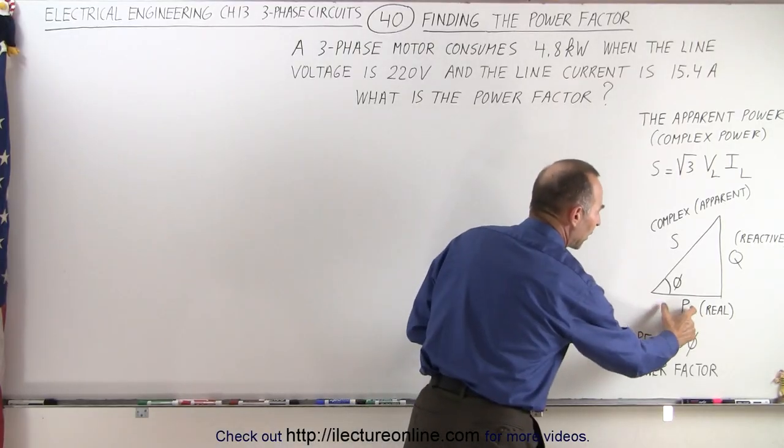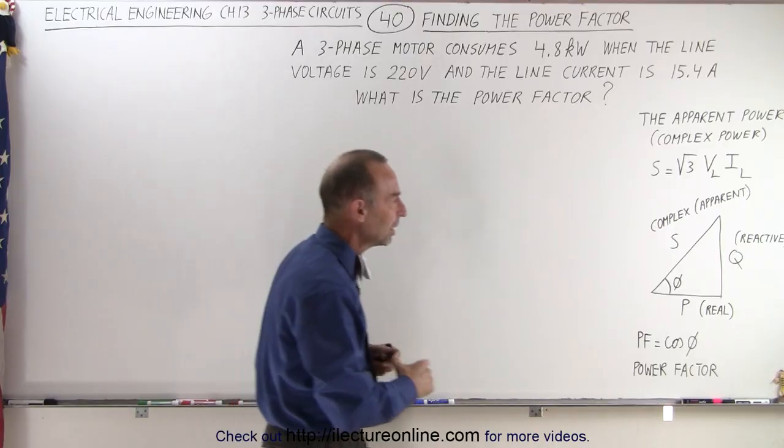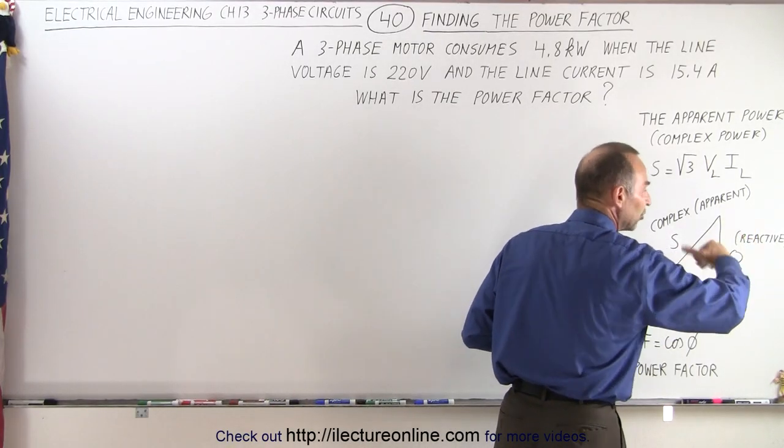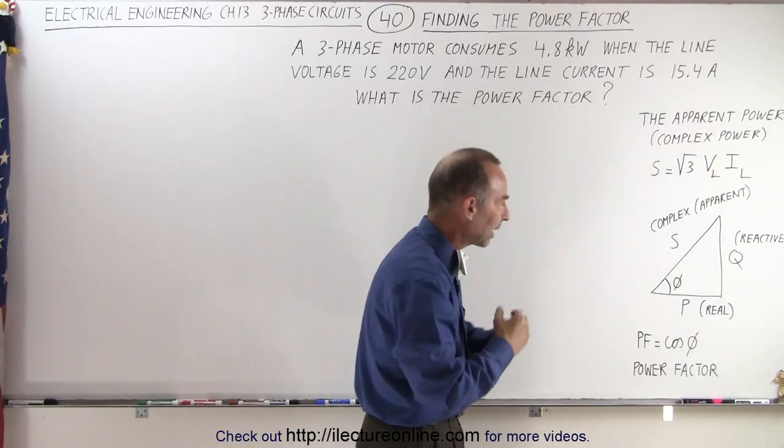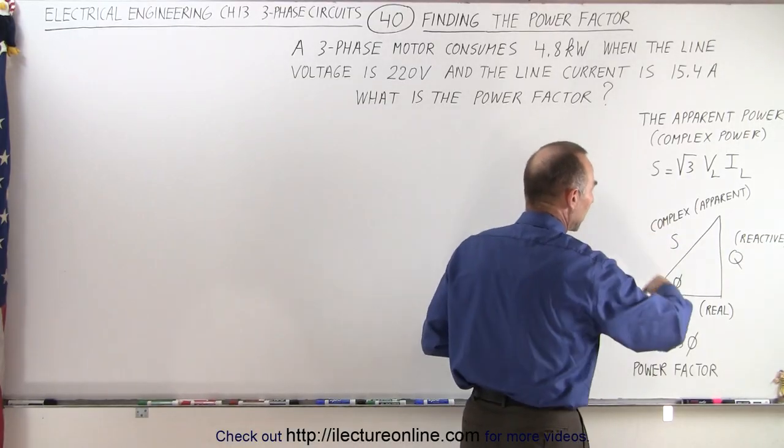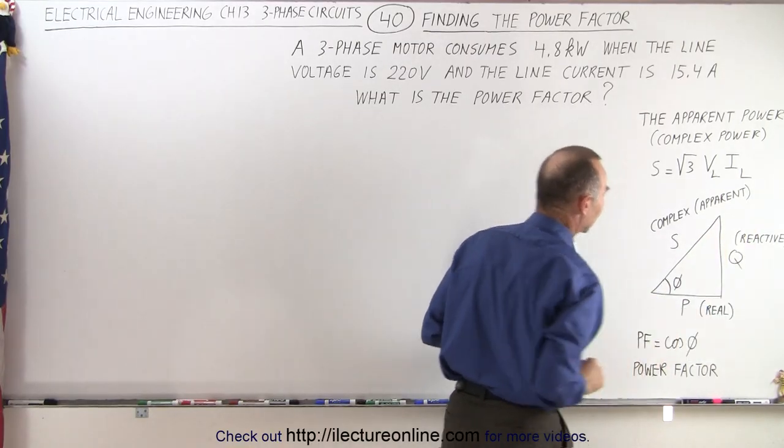The real power is the power consumed by the resistance portion of the impedance. Here we have the reactive portion of the impedance which is not consumed, it is absorbed and given back, absorbed and given back to the system. And then the complex power is simply the sum of those two, which consists of the real power plus the reactive power.